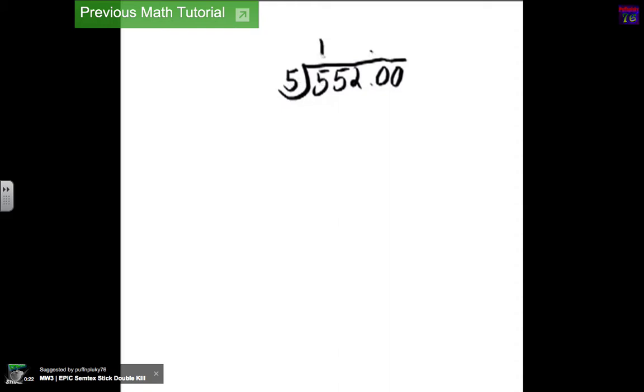5 can go into 5 one time, and 5 times 1 equals 5. So then we subtract. 5 minus 5 equals 0, and you bring down the 5, which equals 5. So, how many times can 5 go into 5? One time.